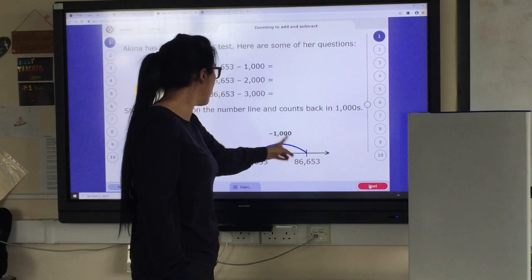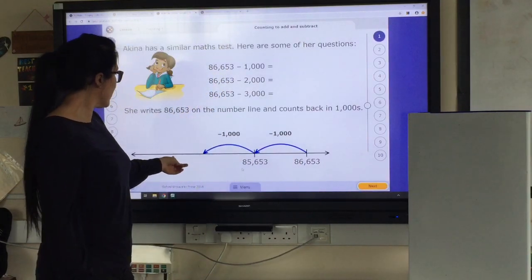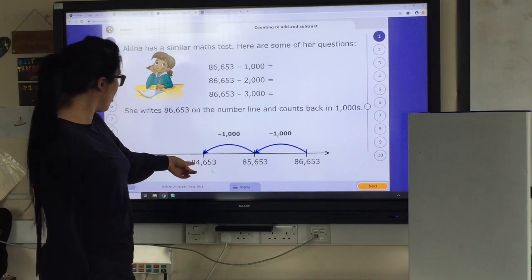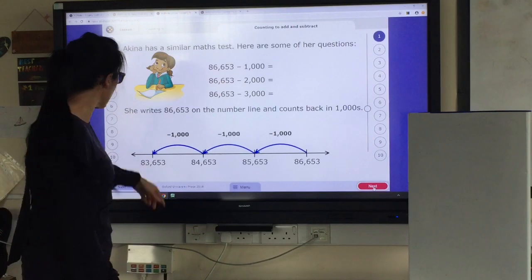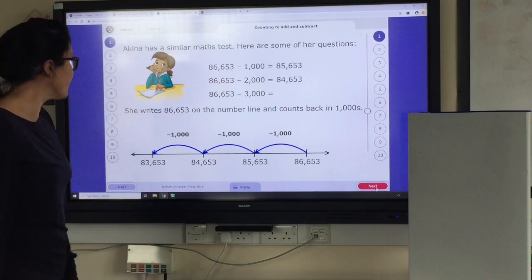This six is going to become a five. Subtract another thousand. It's going to become four. Another thousand and it's going to become three. So we end up with 83,653.